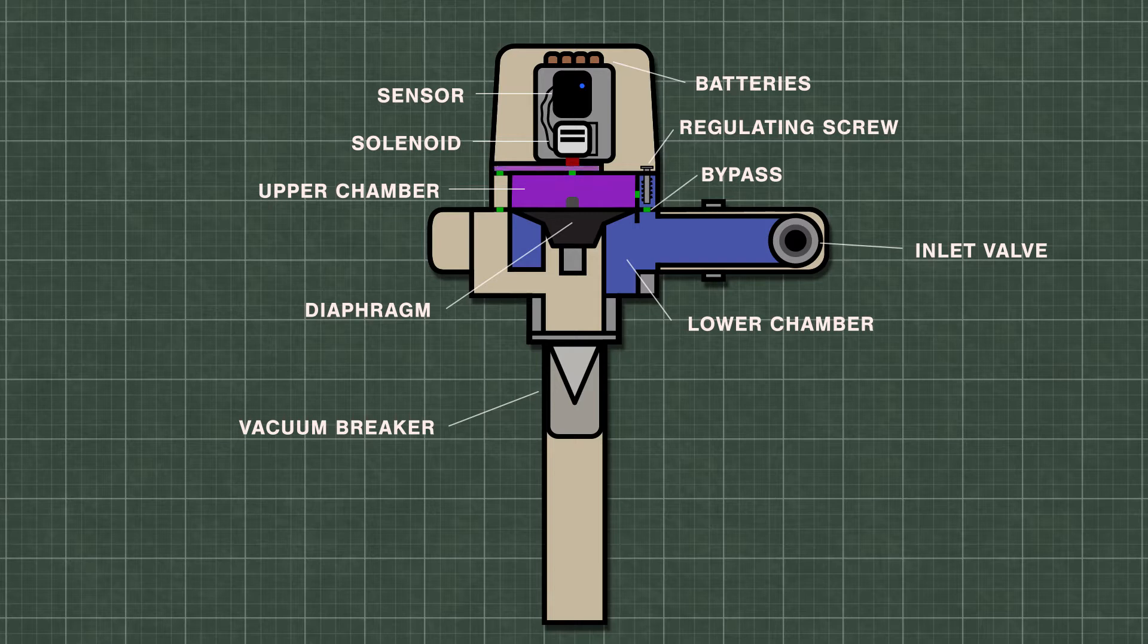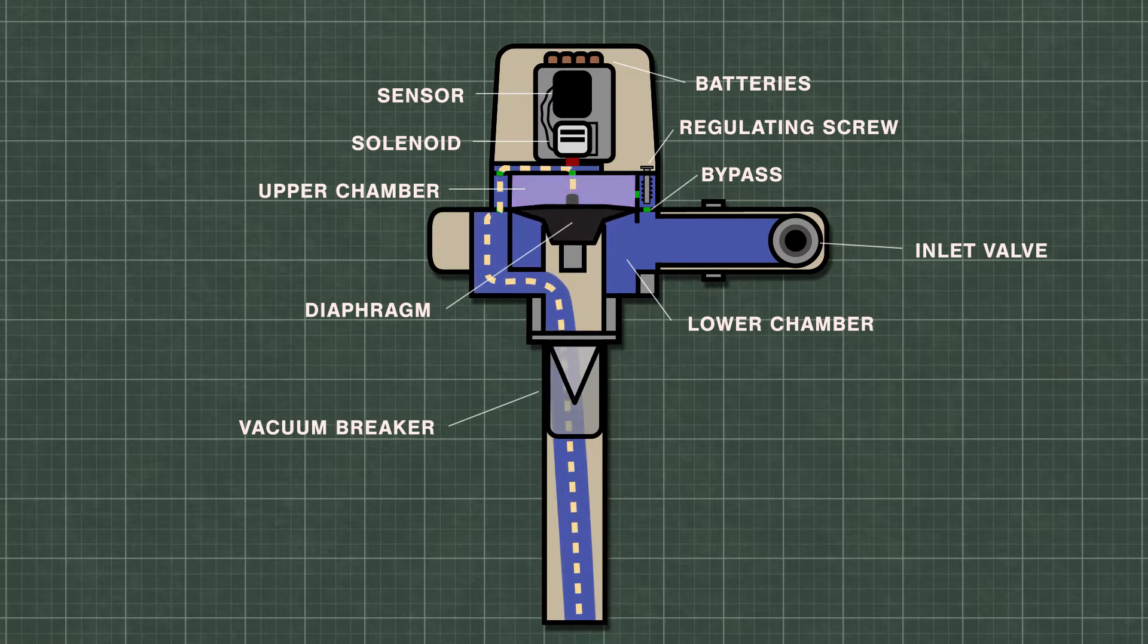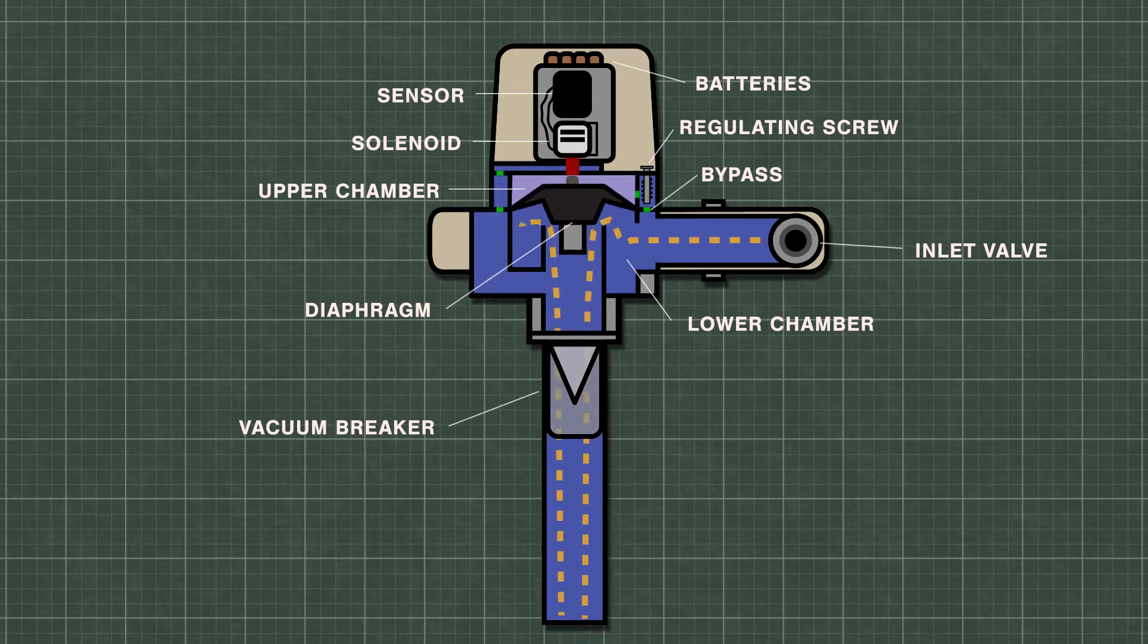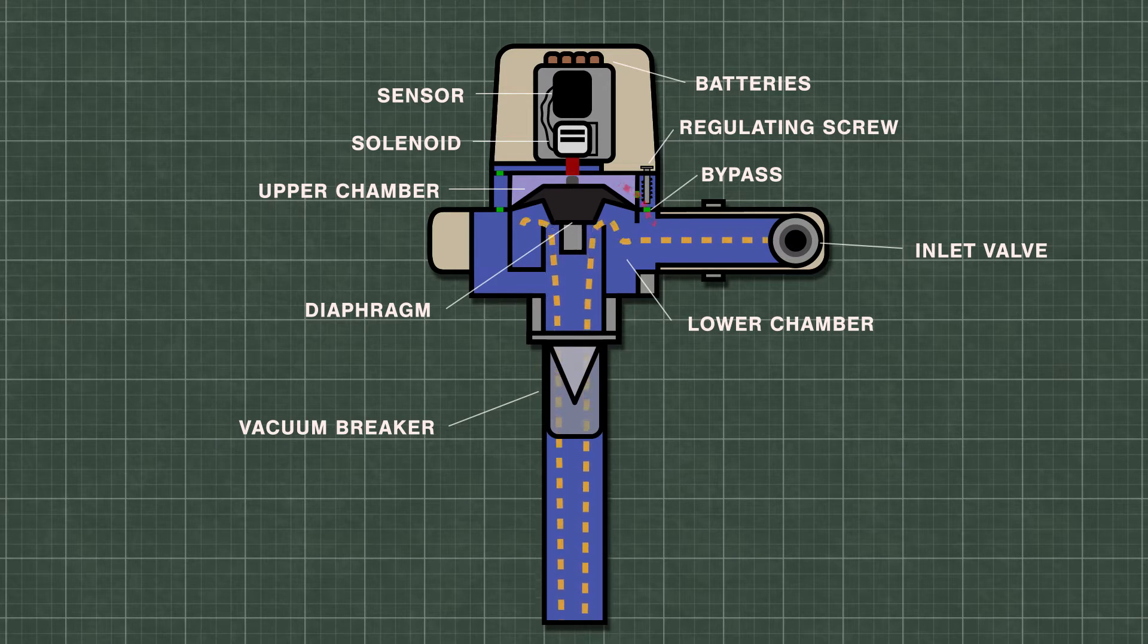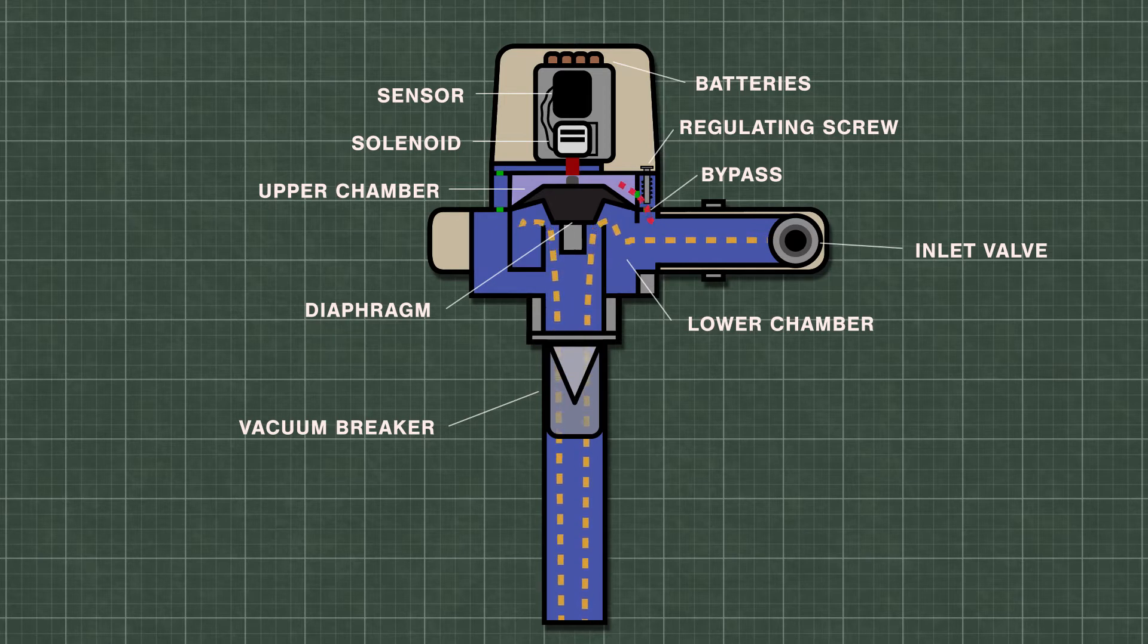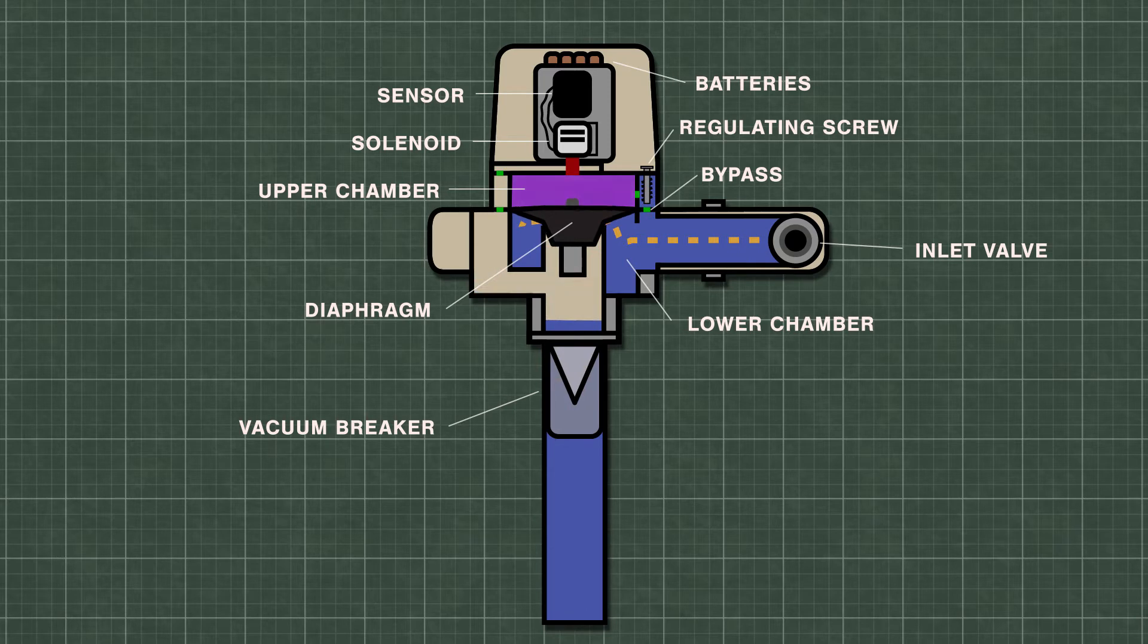When the sensor is activated, the solenoid valve opens and releases water from the upper chamber. This creates a vacuum which lifts the diaphragm up from the valve seat. The water from the inlet then travels down the flush pipe. As the water flows, some of the water slowly travels through the bypass and will eventually fill the upper chamber. The flush will continue until the pressure pushes the diaphragm down once again.